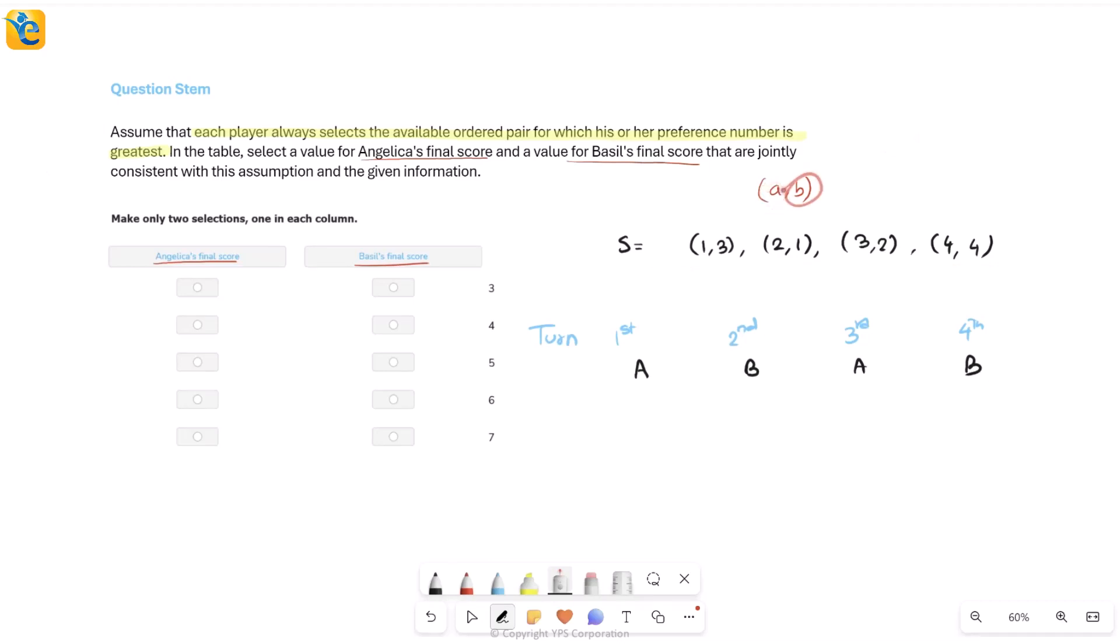Angelica's preference number, then comes Basil's. These are the way the turns are going. A, B, A, B. Now combine it with how the picking is done. So let's just start playing the game. So Angelica will start.